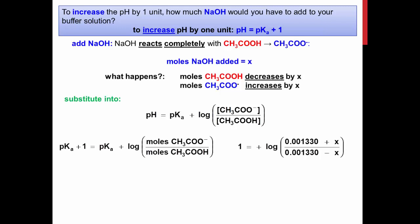Substituting everything into the Henderson-Hasselbalch equation produces the expression pKa plus one equals the pKa plus the log of the moles of acetate plus x divided by the moles of acetic acid minus x.